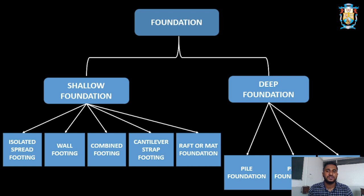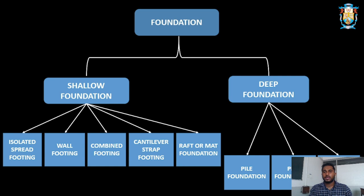Shallow foundation is further divided into five types: isolated spread footing, wall footing, combined footing, cantilever or strap footing, and raft or mat foundation. Deep foundation is subdivided into three types: pile foundation, pier foundation, and caisson foundation.